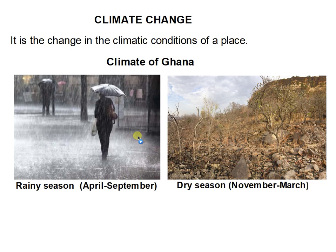We can establish that the rainy season starts from April to September, and the dry season starts from November to March.